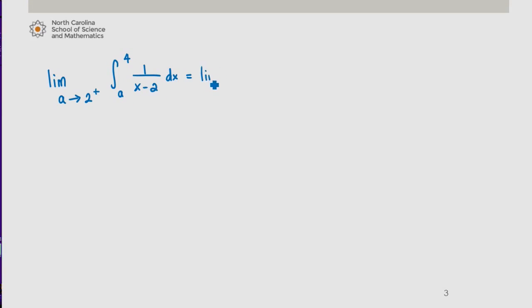That's equal to the limit as a approaches 2 from above of natural log of absolute value of x minus 2 evaluated from a to 4, which is equal to the limit as a approaches 2 from above of the natural log of absolute value of 4 minus 2, minus the natural log of a minus 2.